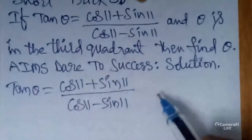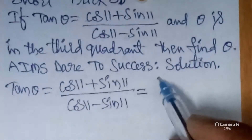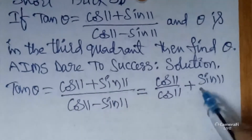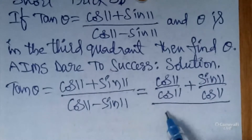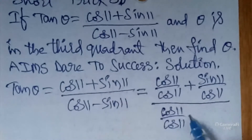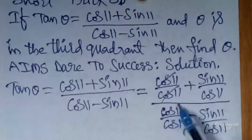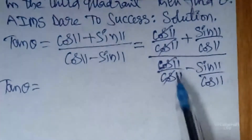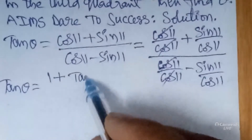According to the left side value, the right side value we can also convert in terms of tan. To get it related to tan, I divide by cos11. In the numerator we get cos11/cos11 + sin11/cos11, divided by the denominator also divided by cos11: cos11/cos11 - sin11/cos11. Here cos11/cos11 cancels in numerator and denominator. After that, tan θ = 1 + tan11.